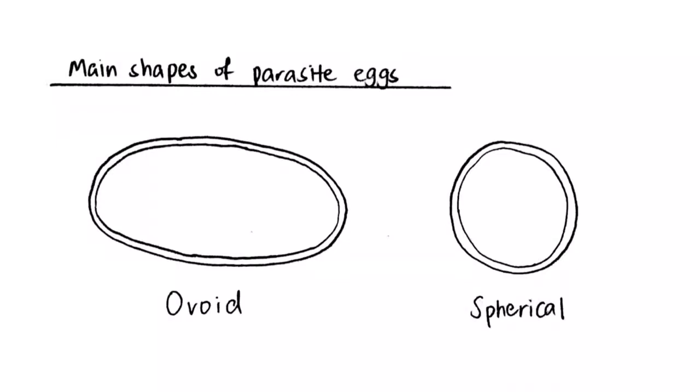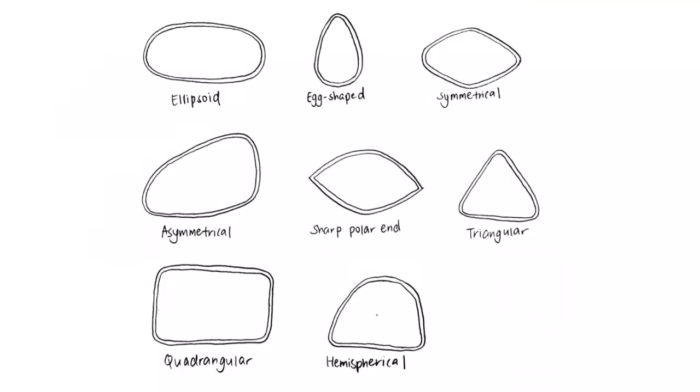The eggs can be ovoid, where it is round and has an oval shape. It can also be spherical, where it is round, globular and circular. Aside from these two shapes, eggs of parasites can have other shapes shown here as well.